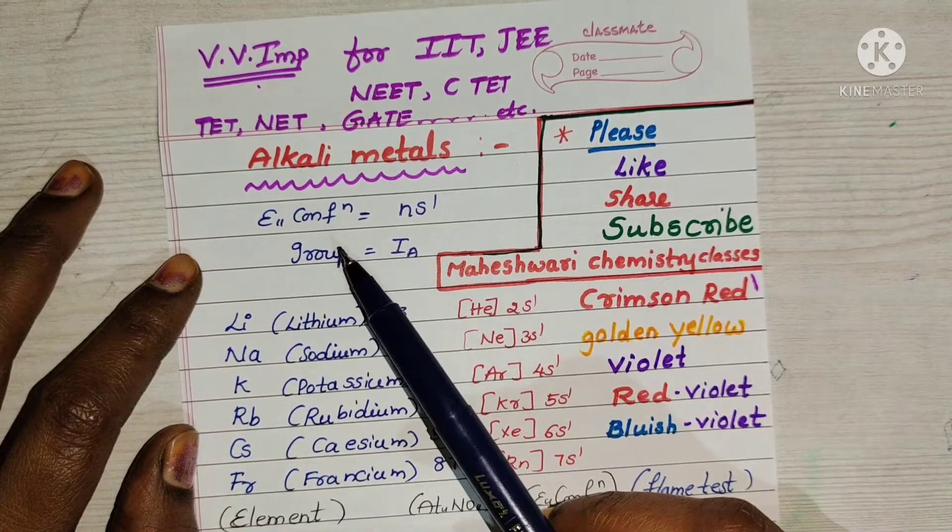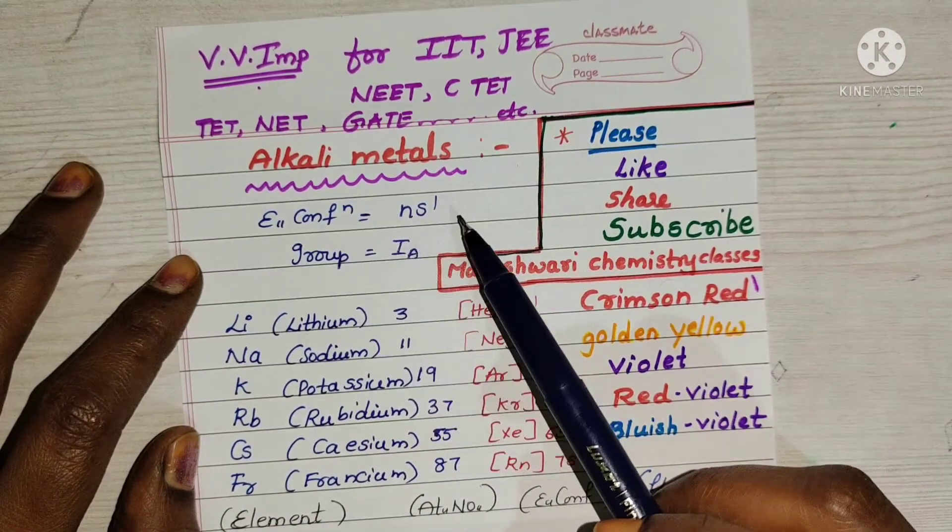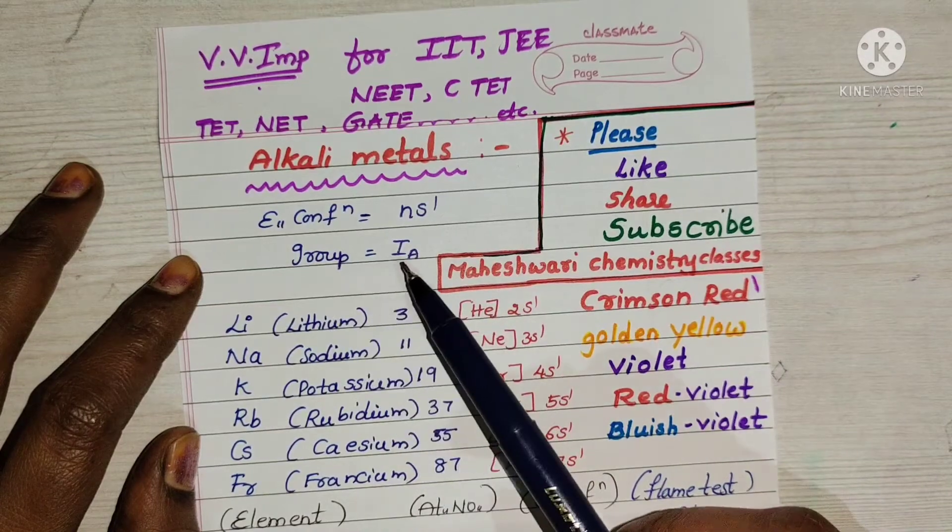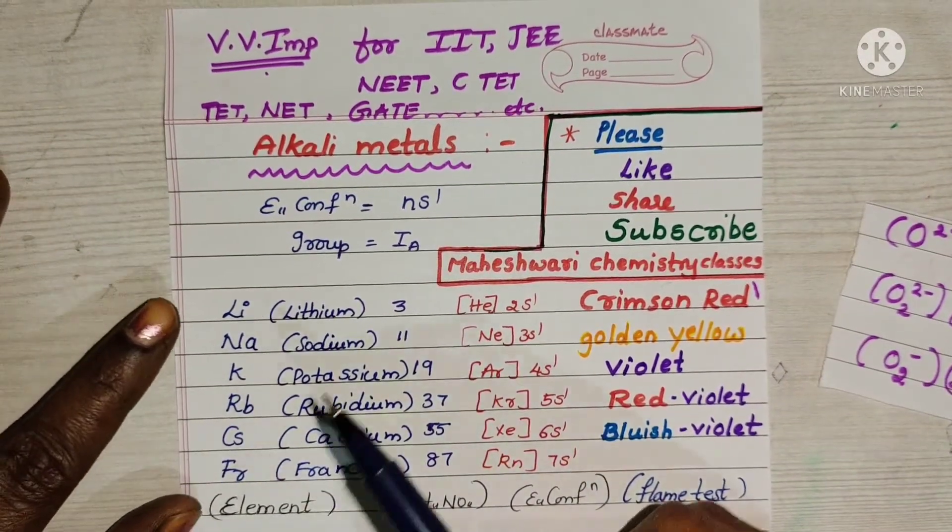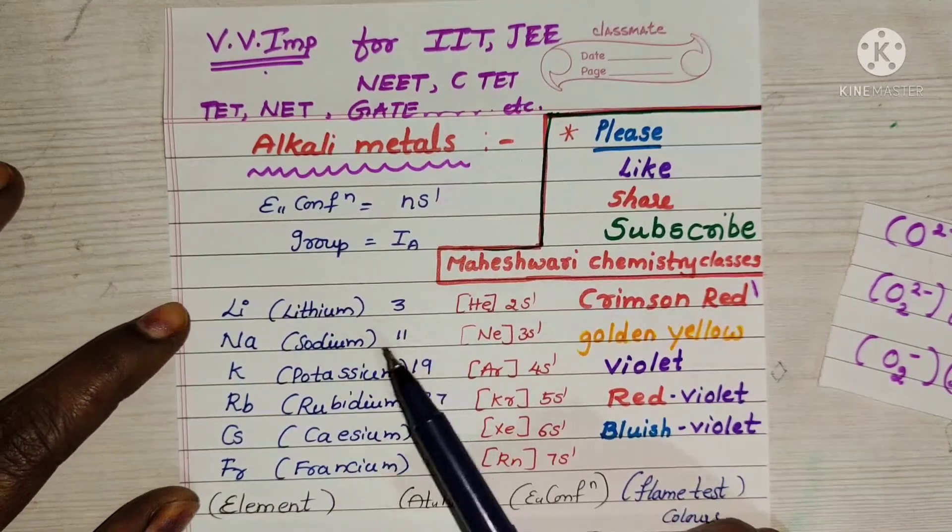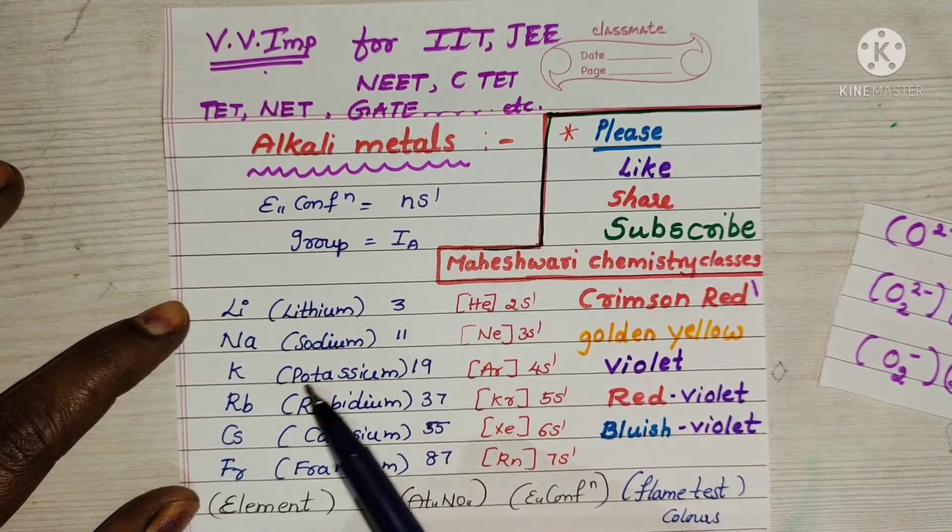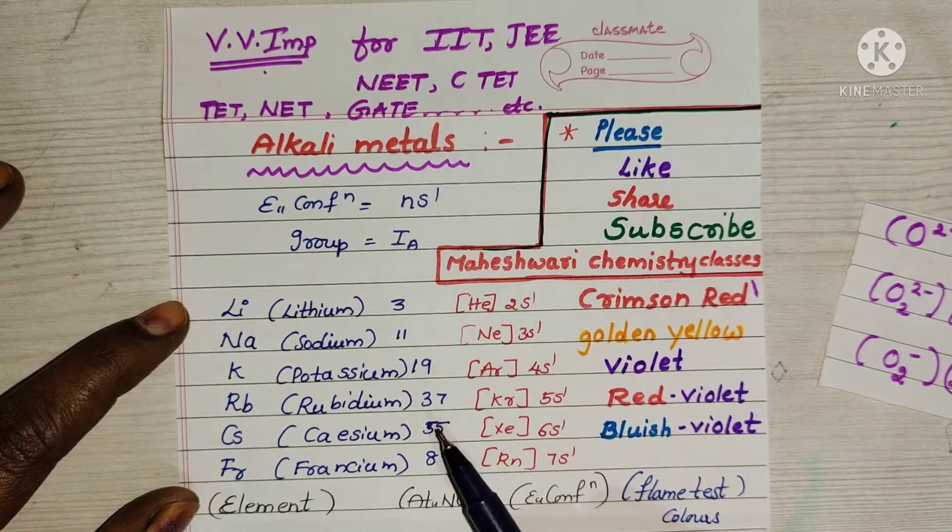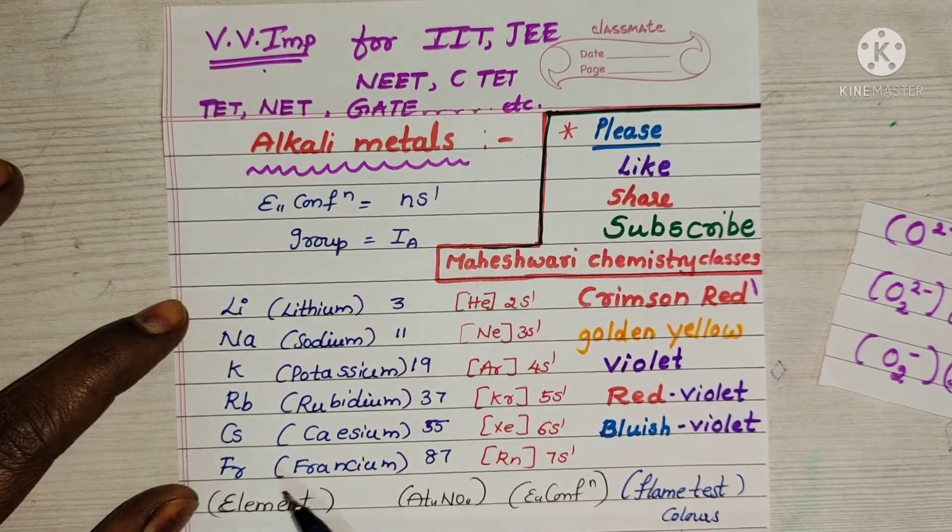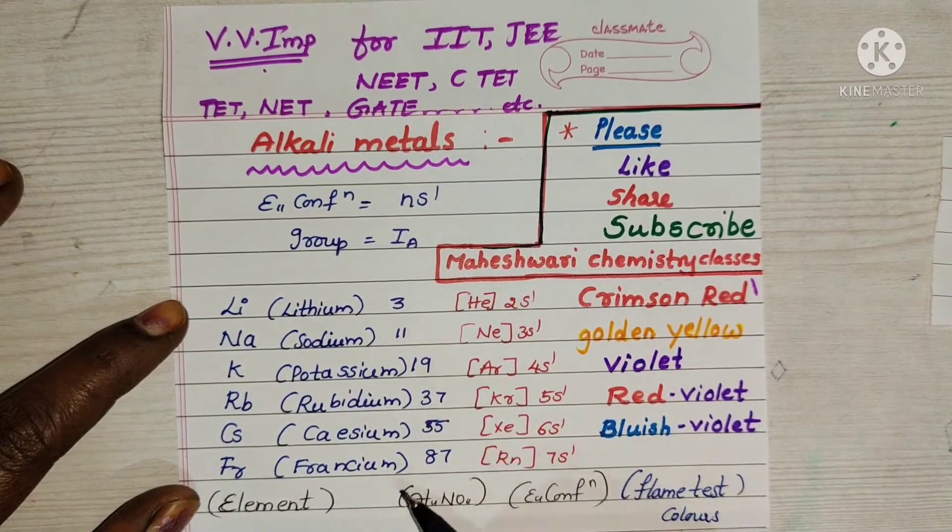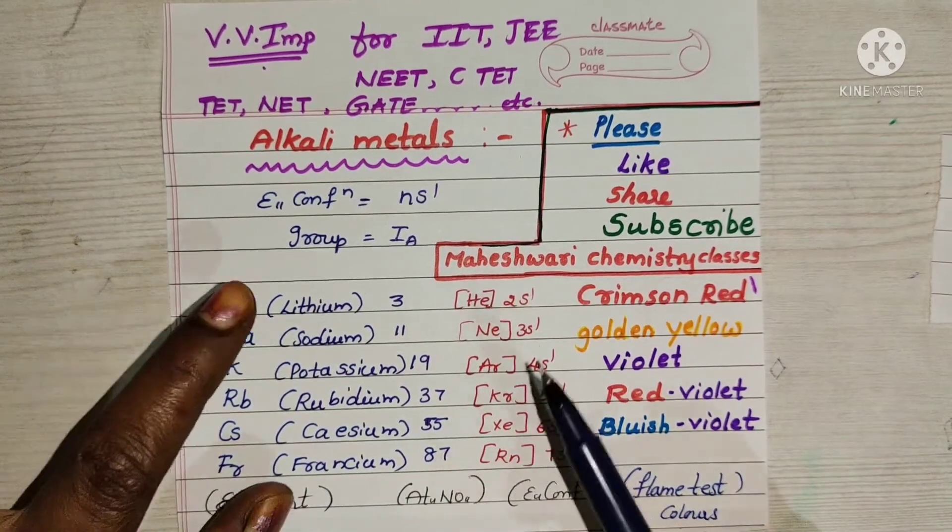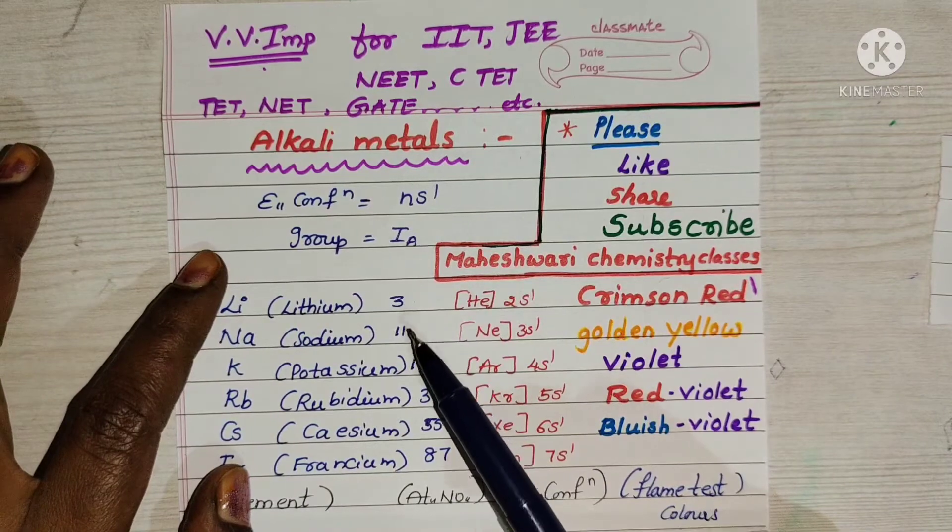Electronic configuration is ns1. Group number is 1A. Lithium atomic number 3, sodium 11, potassium 19, rubidium 37, cesium 55, francium 87. Simply for understanding purpose, the difference between 3 and 11 is 8.